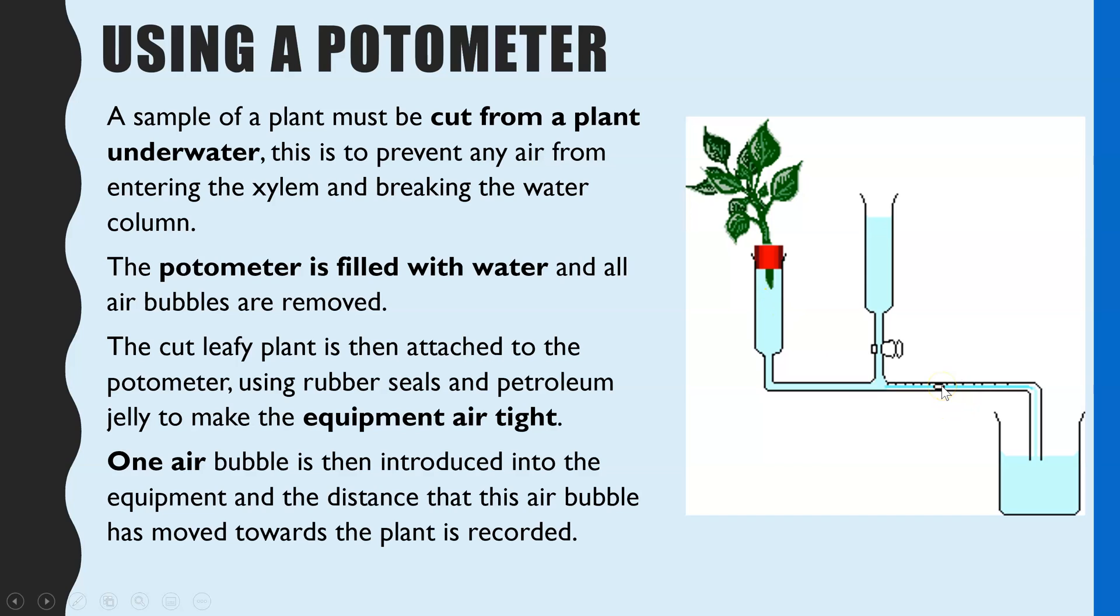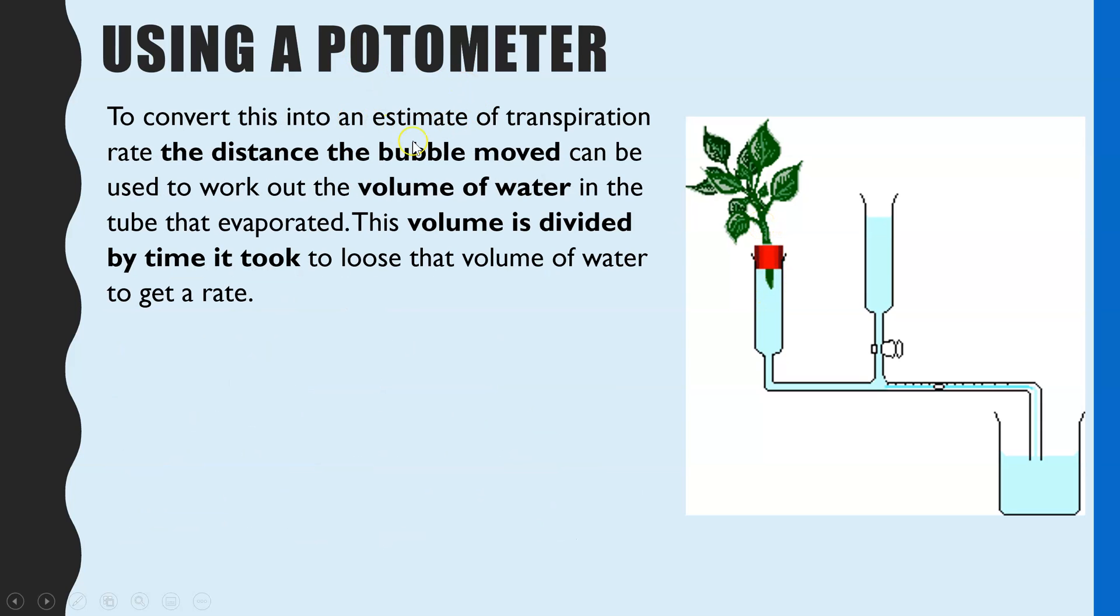The way you're getting that idea is you're looking at how far that air bubble moves. This water is continuously moving towards the plant because as that plant is transpiring, more water is drawn up into the plant. To convert this into an estimate of transpiration rate, the distance that the bubble has moved can be used to work out the volume of water. You would need to know the volume of a cylinder to be able to work out the volume of water that has moved, and then you would divide that by the time it took for that water to travel.